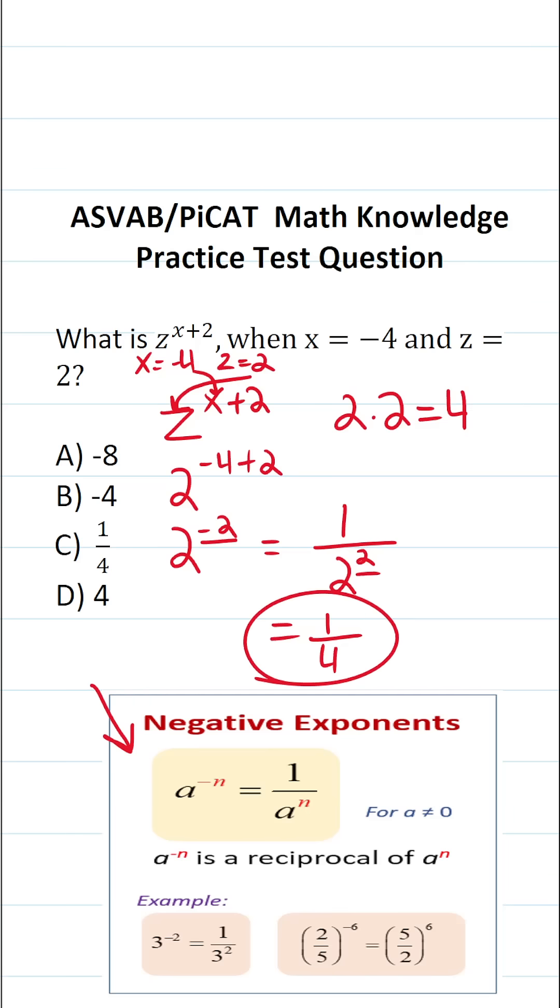In other words, when we evaluate the expression z to the x plus 2, when x equals negative 4 and z equals 2, the answer is C, 1 fourth.